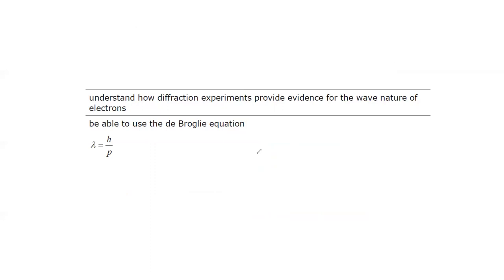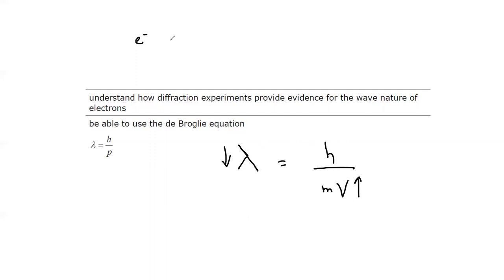The de Broglie equation relates the wavelength associated with a particle to its momentum: λ = h/p = h/(mv), where m is the mass of the electron (constant) and v is its speed. If the electron moves faster, its associated wavelength decreases; if it moves slower, the wavelength is longer.